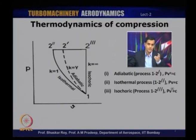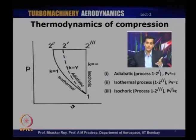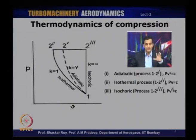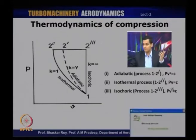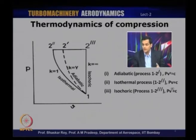The first process, 1 to 2′, is an adiabatic compression process, where the exponent in pv^k is equal to gamma — the ratio of specific heats. An idealized compression process can be expressed as an adiabatic compression which is reversible. A reversible adiabatic process is an isentropic process, meaning entropy remains constant. On a temperature-entropy diagram, this gives a vertical line, indicating constant entropy.